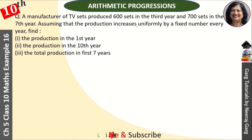Assuming that production increases uniformly by a fixed number every year, find: the production in the first year, the production in the tenth year, and the total production in the first seven years.